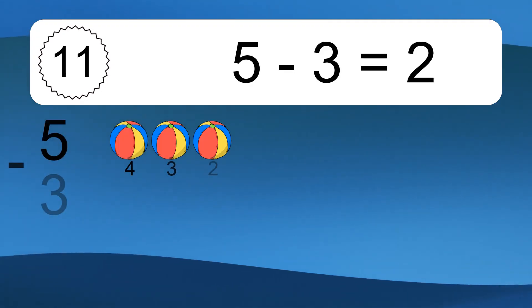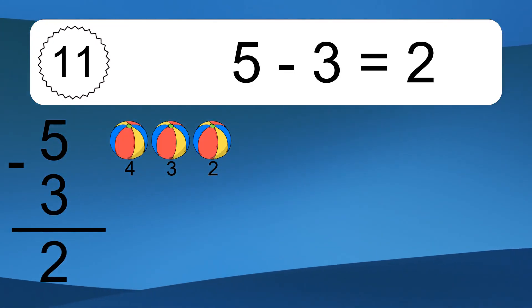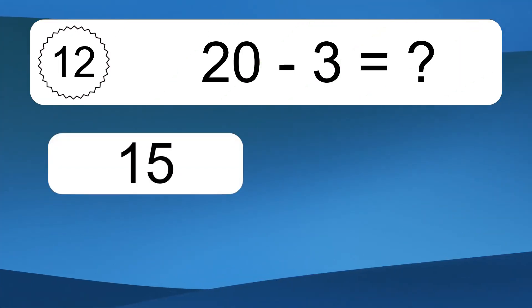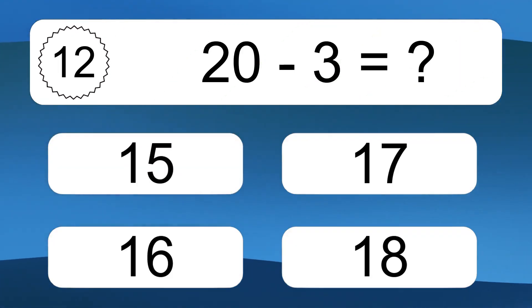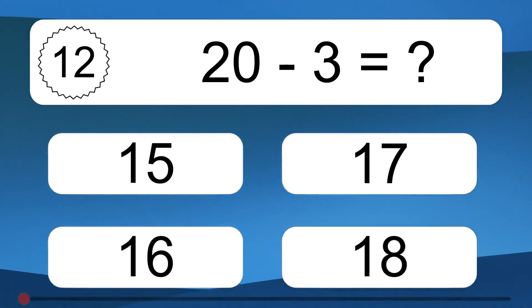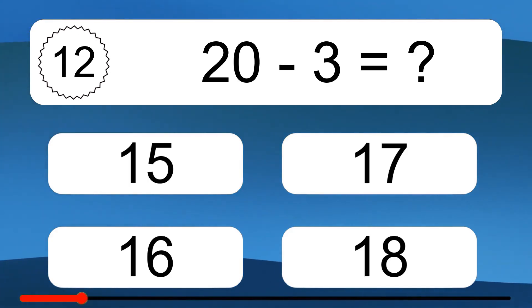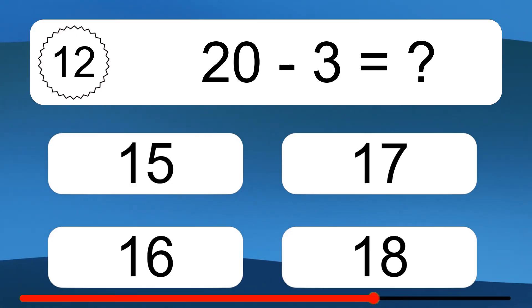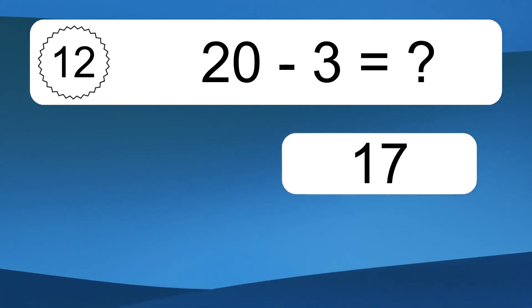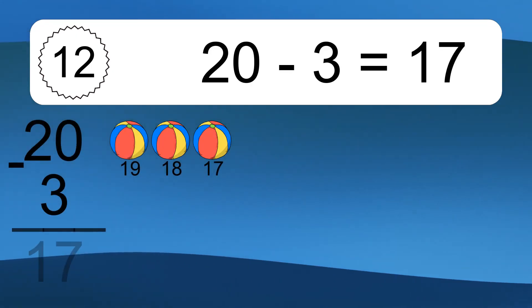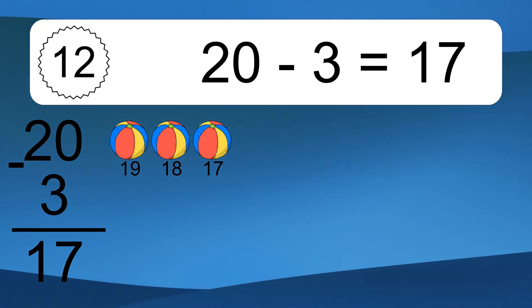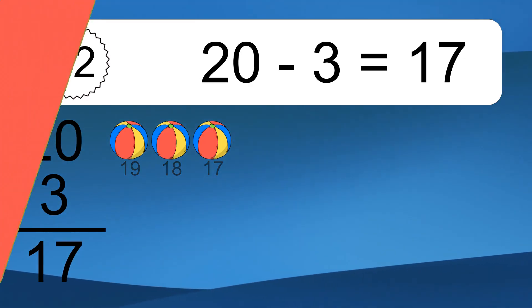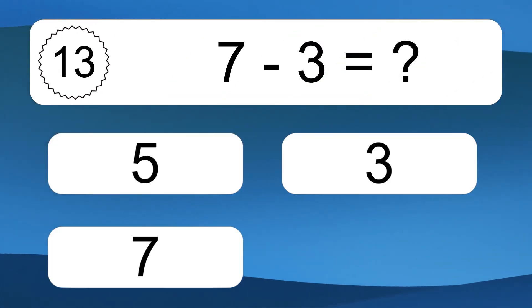5 minus 3 equals what? 5 minus 3 equals 2. Let's count it: 4, 3, 2. 20 minus 3 equals what? 20 minus 3 equals 17. Let's count it: 19, 18, 17.